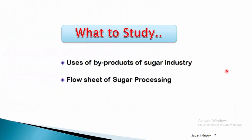In this lecture we will cover very important end topics of this sugar industry — the uses of byproducts of the sugar industry and the flow sheet of sugar processing. As we know, the sugar industry has two very important byproducts: molasses and bagasse.